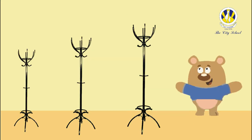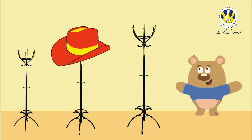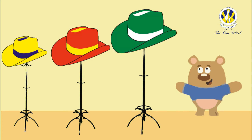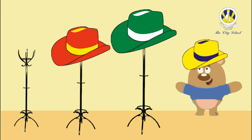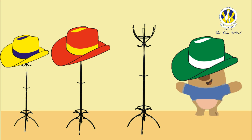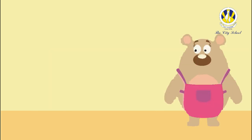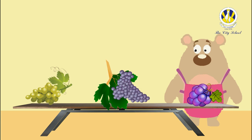Now Baby Bear wants to buy a hat for himself. Which hat will he buy — is it the red hat, the yellow hat, or the green hat? Great thinking, kindergarteners — the yellow hat, as it will fit Baby Bear perfectly! Can you tell what will happen if Baby Bear buys the green hat? Great observation — the green hat is the biggest and is too big for Baby Bear.